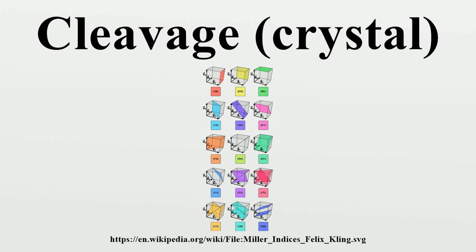Fluorite exhibits perfect octahedral cleavage. Octahedral cleavage is common in semiconductors. Diamond also has octahedral cleavage. Rhombohedral cleavage occurs when there are three cleavage planes intersecting at angles that are not 90 degrees.